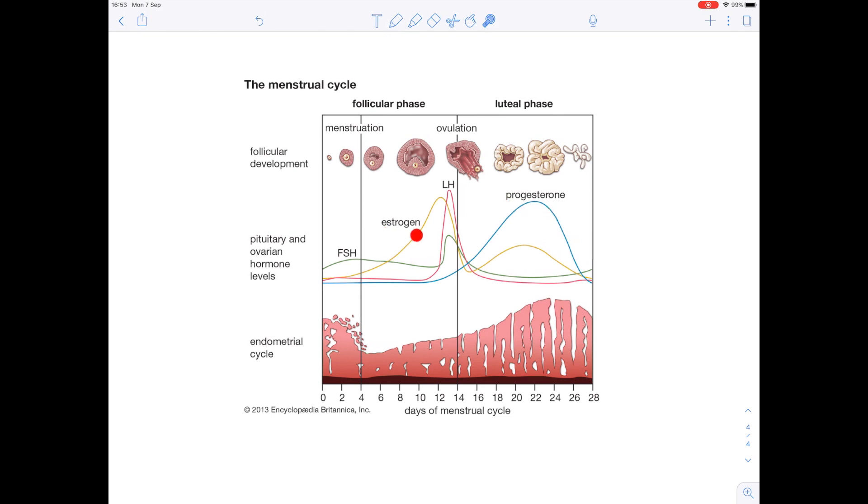Now turning our attention to estrogen, notice that we're getting a buildup of that uterus lining down here, the endometrium is thickening. With the rise in progesterone we can see that that endometrium lining is being maintained and it's getting ready for that embryo to potentially implant.